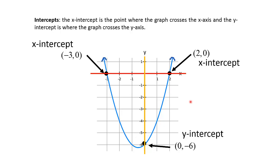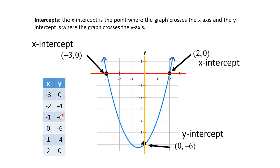Besides seeing all the intercepts on the graph, you could also see them on a table. The x-intercepts on the table are identifiable because that's when the y-values are 0, because that's where the graph is crossing over the x-axis. So we have negative 3 and then 2. In the same manner, the y-intercept will be represented where x is 0, and that's when the graph is crossing through the y-axis.